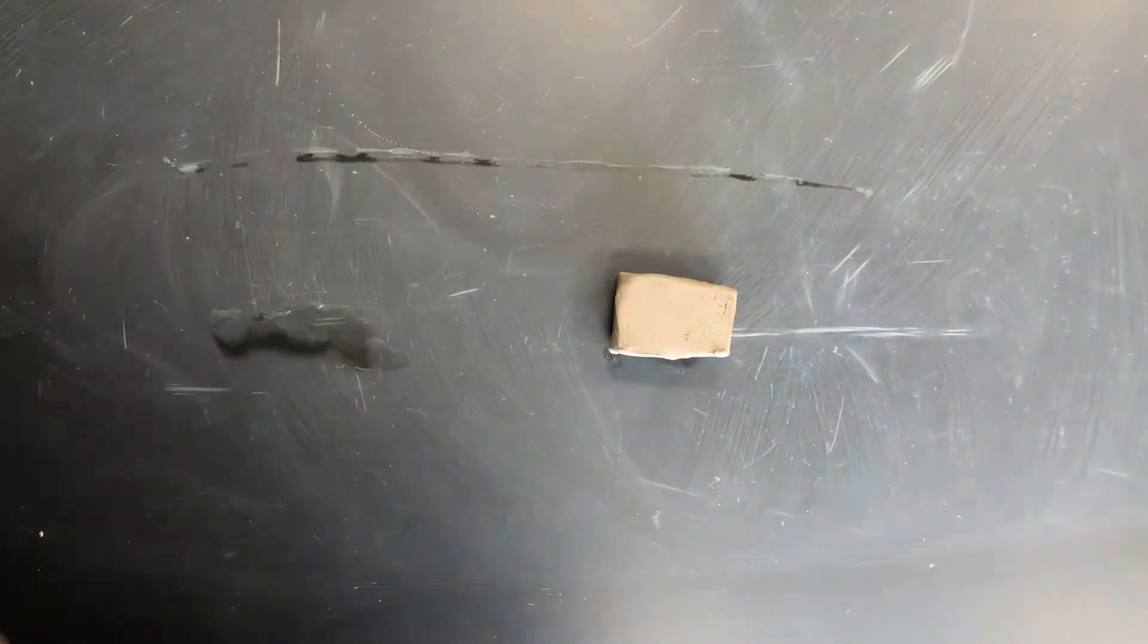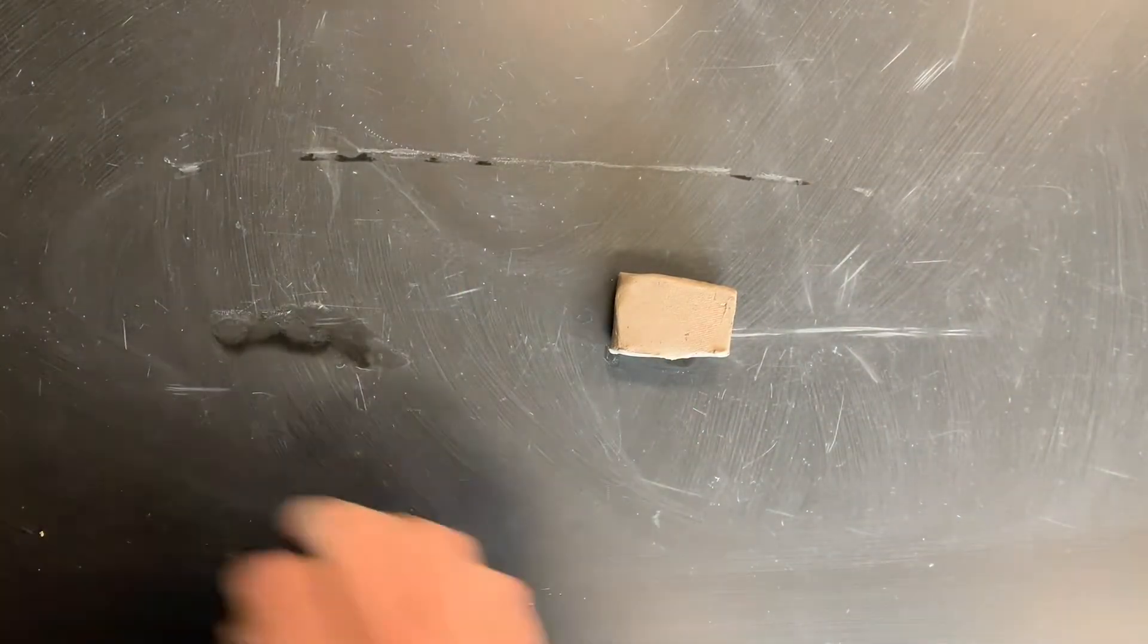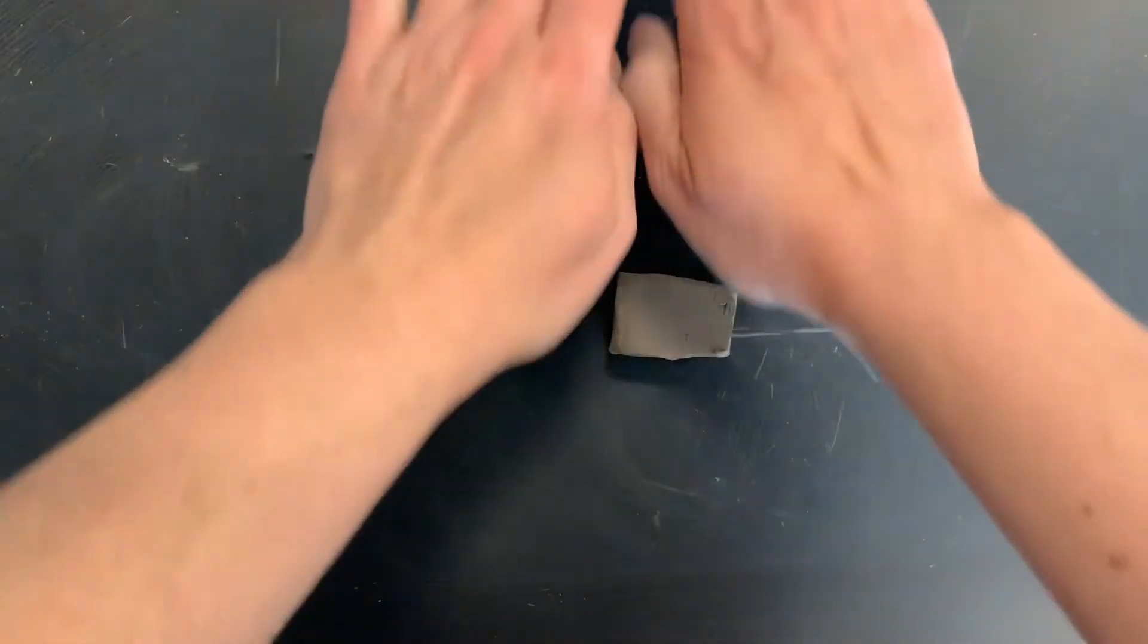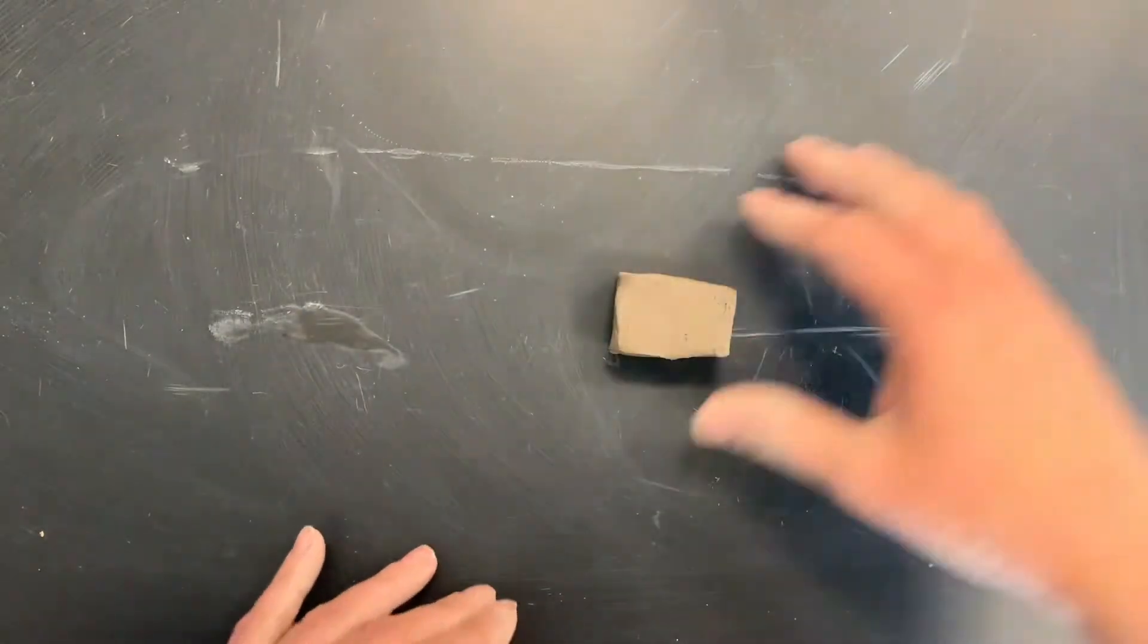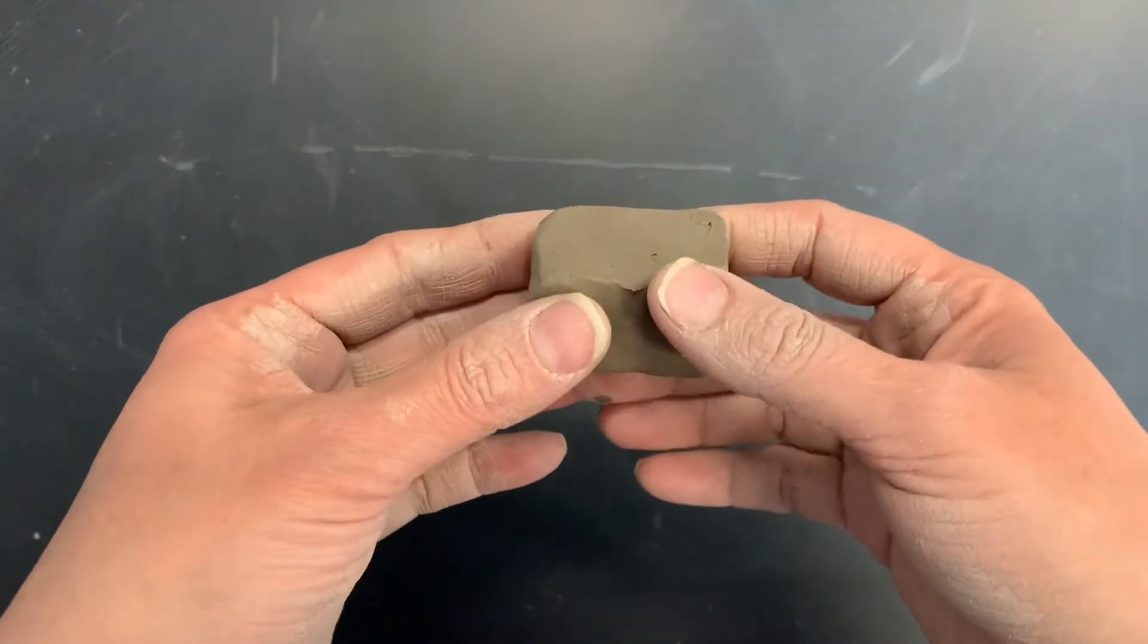We're also going to need to clear our workspace so we have plenty of room to roll our coil upward, so about two feet of the tabletop. Push everything out of your way. You're going to take your clay.